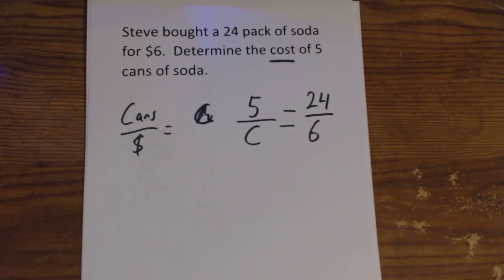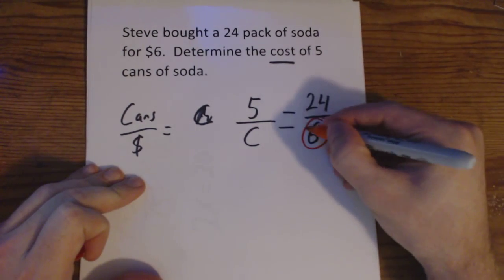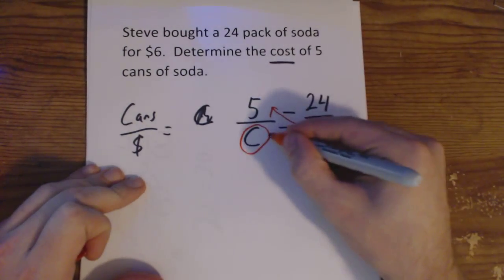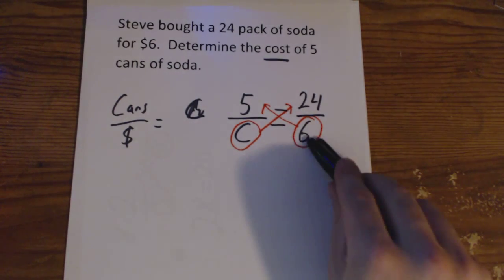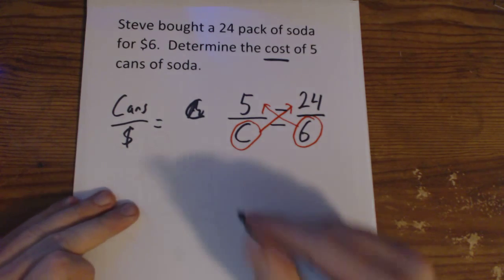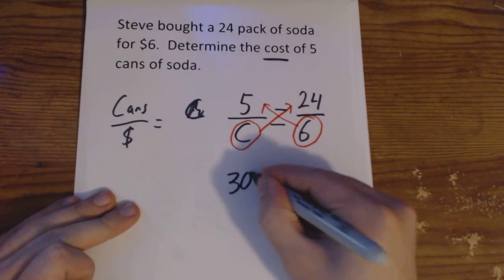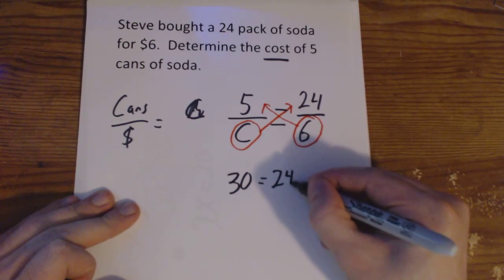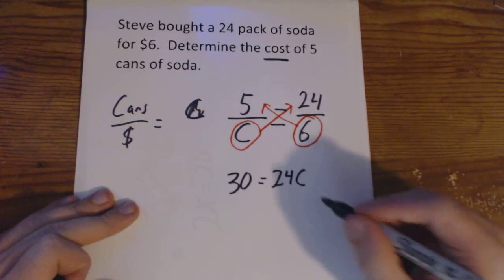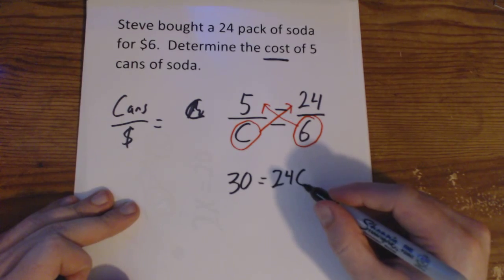We take that 6 up, the C up. This side, 6 times 5, we're going to have 30 equals 24 times C, 24C. Again, we want to get C by itself. We want to find out what the cost is.